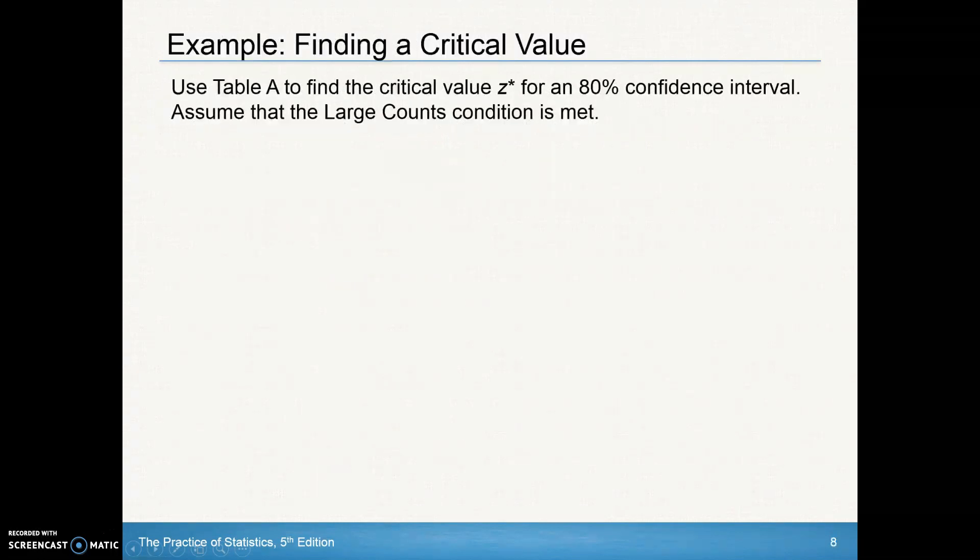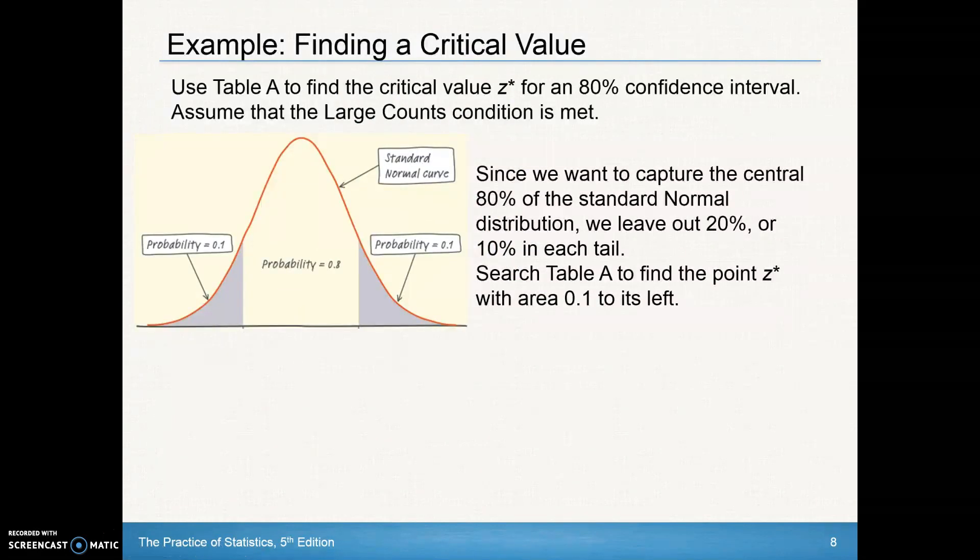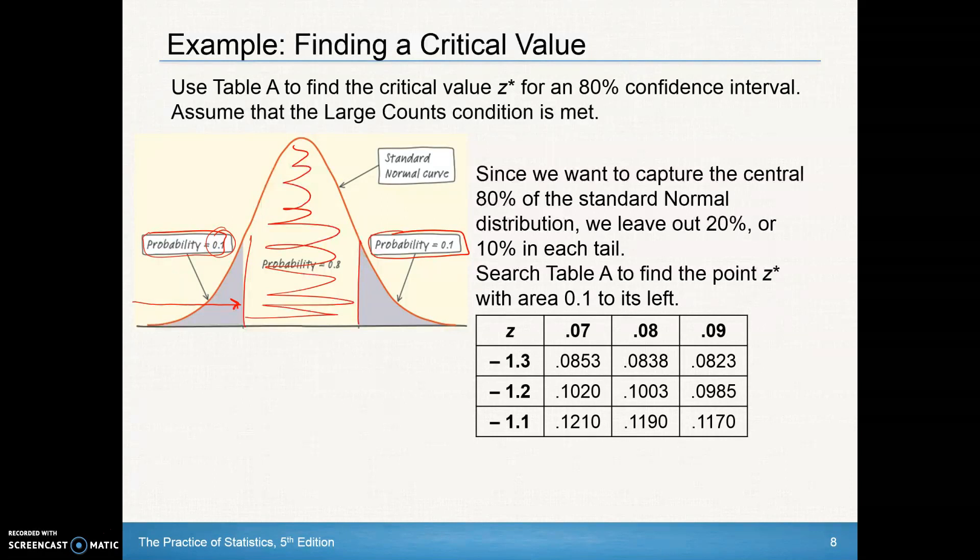Using table A to find the critical value for an 80% confidence interval. If we're trying to find 80%, I want that 80% to be in the middle of the curve. So it means I've got 20% on the outside, 10% out here and 10% out here. If I'm going to use table A, I could go and find the area that's closest to 0.1. If I look here, I've got 0.1003, 0.0985, both pretty close to that 10%, though 0.1003 is the closest. So my Z star would be negative 1.28 as I go through the chart. This value here, my Z star, is negative 1.28. The positive one would be 1.28.